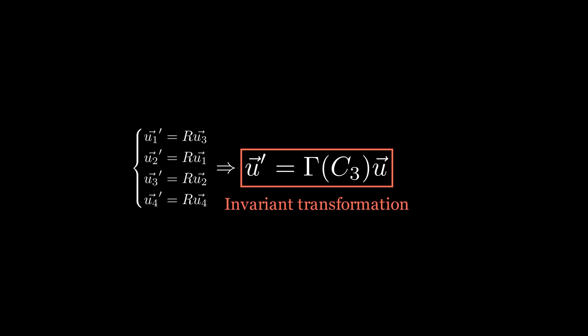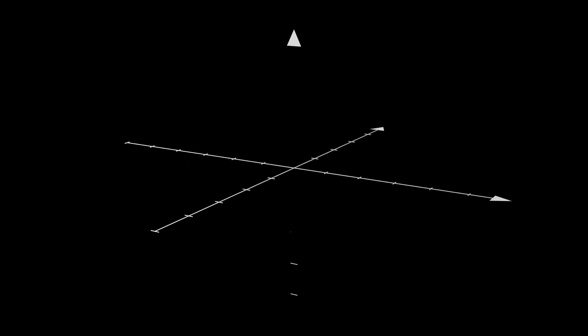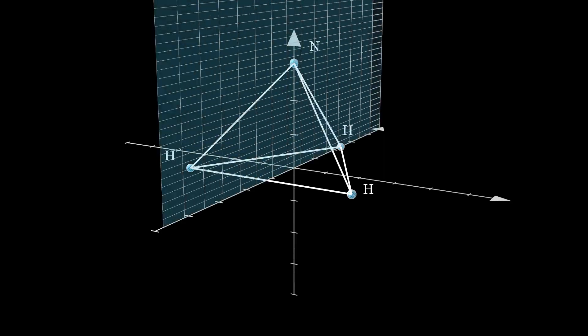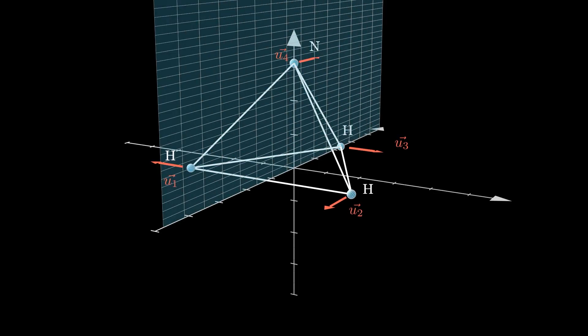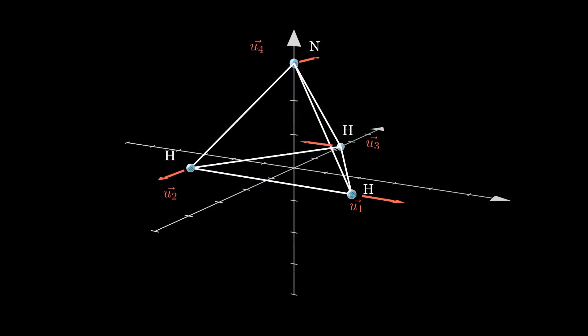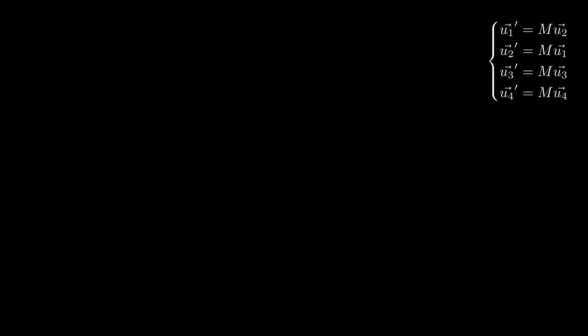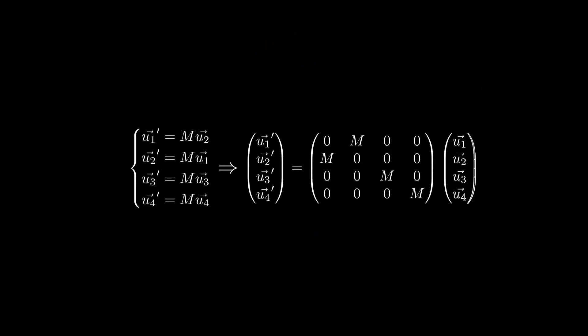We have found an invariant transformation of our 12-dimensional vector space. As you may imagine, this is not the only one in this problem. Let's take a look now at a mirror transformation on the x equals 0 plane, or in other words, inverse the x-axis. This time, only atoms 1 and 2 exchange position, and all displacement vectors are x inverse, which means they are multiplied by a M matrix representing the inversion. Again we obtain four transformations which can be written in a matrix form, defined by gamma of sigma1 this new matrix.